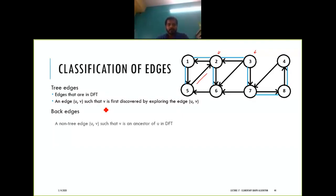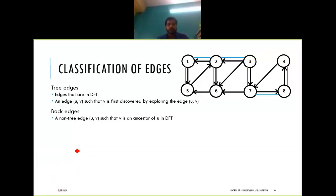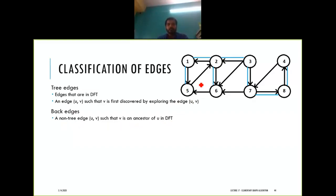A back edge is a non-tree edge uv such that v is an ancestor of u in the DFT. For example, edge 5 to 2: in the tree, 2 is an ancestor of 5, so this non-tree edge pointing from descendant 5 to ancestor 2 is a back edge.